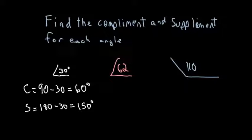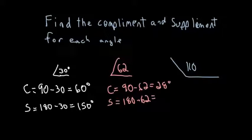So the next one is 62. Again, our complement, we do 90 minus 62 to give us 28 degrees. So our supplement equals 180 minus 62. So that would be 118 degrees for our supplement.